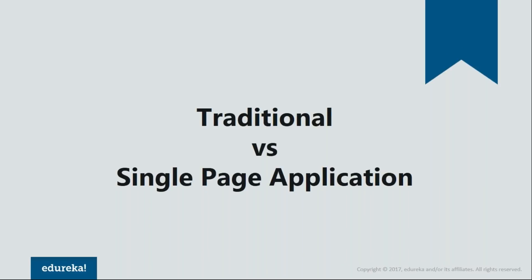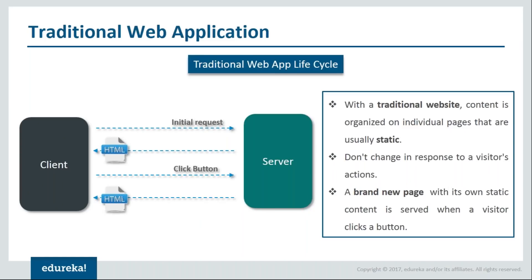Let us understand this difference by comparing the single-page application approach with that of the traditional website approach. In a traditional application, you generally have a website organized as a bunch of static pages. Each time you perform an interaction — for example, suppose you clicked on a sign-up button — the request for opening that page will be passed to your server. The server then responds with a brand new sign-up page that gets loaded in your browser. This is how responsiveness was achieved in a traditional website.